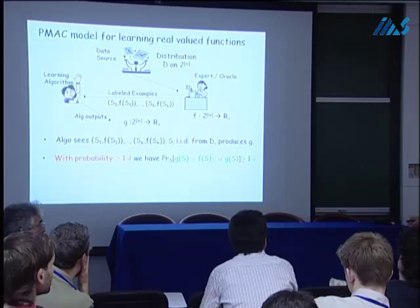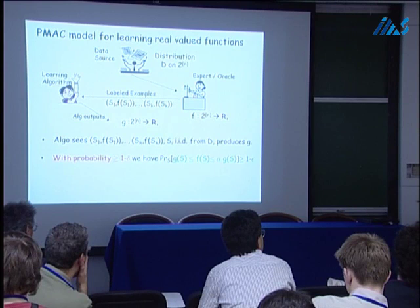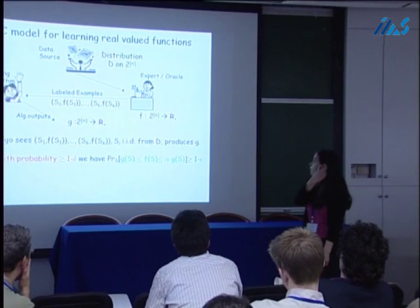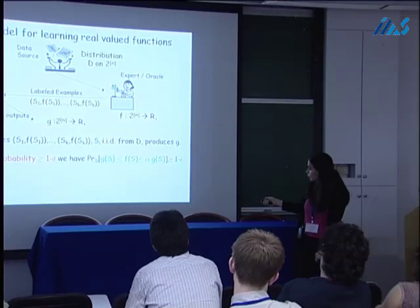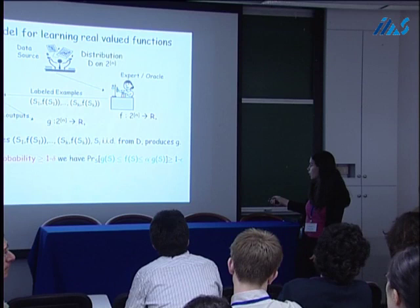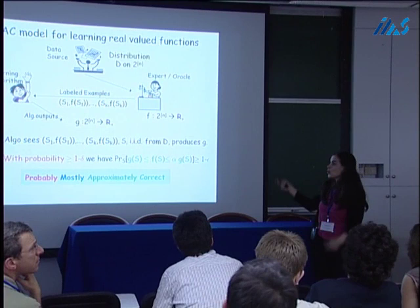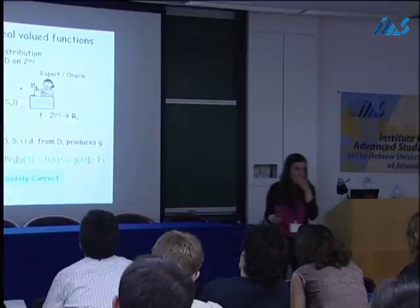The G that we learn doesn't have to be submodular — if you insist on it being from the same family, that would be called proper learning. What we want is that with high probability over the draw of the training set, G is within a factor of alpha of the target function on most examples from the same distribution D. So we want to be 'probably mostly approximately correct' — that's why we call this model the PMAC learning model.